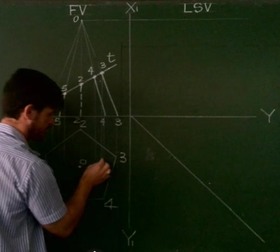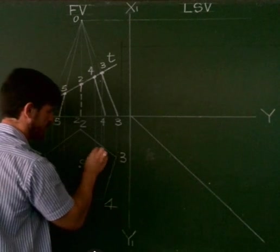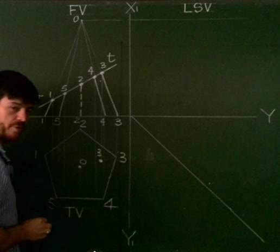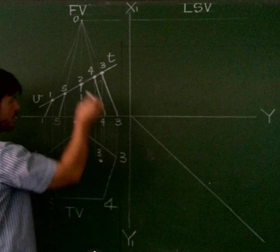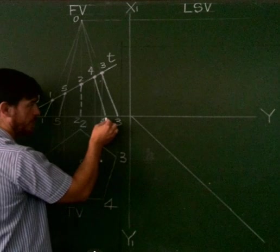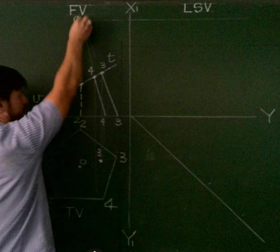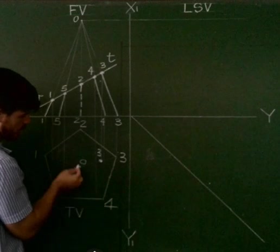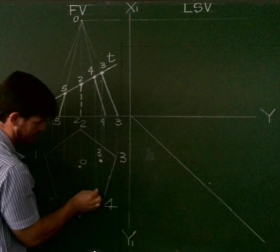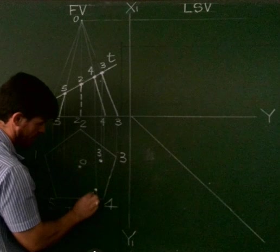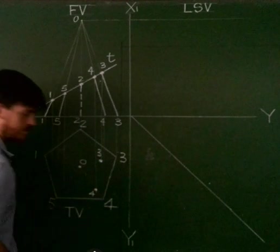Project it down, and that will give me cut point three. Let's do the next one. Between ground point four and the apex zero, I've found cut point four.